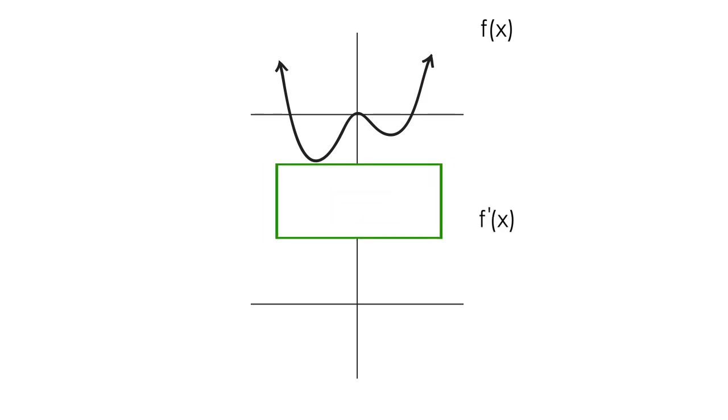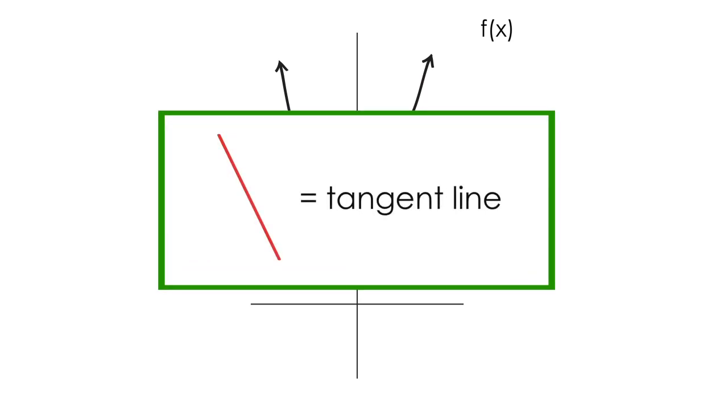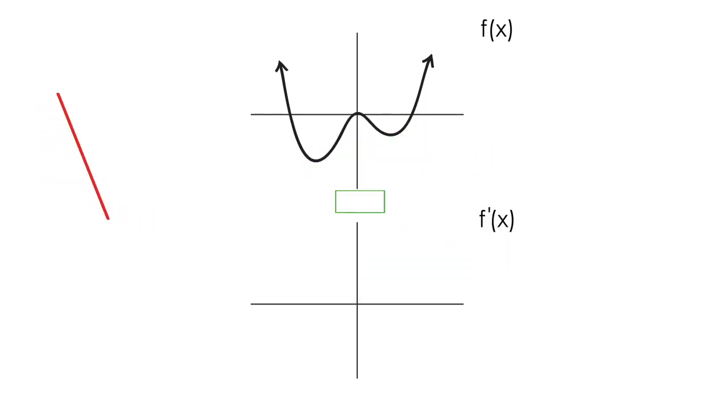Given the graph of a function f, we can sketch its derivative using this definition of the derivative and our understanding of tangent lines. Remember, a tangent line is just a line that touches the curve at one point. The slope of this tangent line will be key to developing our graph of this function's derivative.